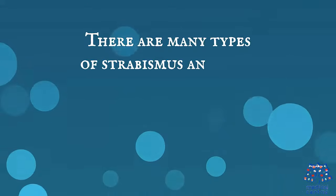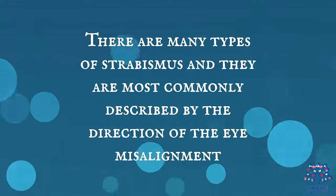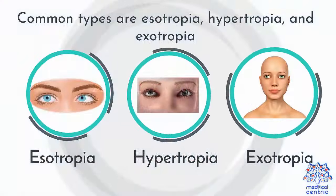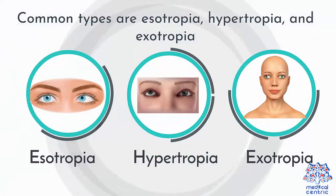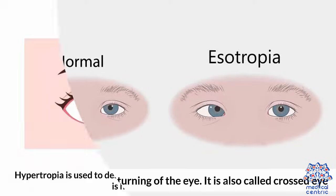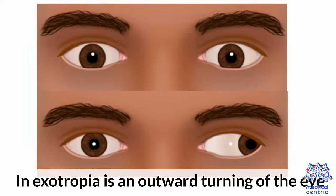There are many types of strabismus and they are most commonly described by the direction of the eye misalignment. Common types are esotropia, hypertropia, and exotropia. Esotropia is an inward turning of the eye, also called cross-eyed. Hypertropia describes vertical misalignment, where the abnormal eye is higher than the normal eye. In exotropia, it is an outward turning of the eye.